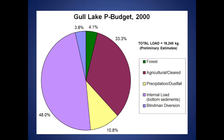Obviously, watershed management is the priority for a number of reasons. First, you're controlling the source. Second, it contributes a significant amount of nutrients going into the lake. And finally, it's often the cheapest and easiest method to pursue. Doing in-lake management means direct manipulation on a lake — it requires a lot of permitting in many cases and a huge investment in time and money. We're not saying you should never look at in-lake management — Pine Lake is a good example where we do have in-lake management — but keep those things in mind.